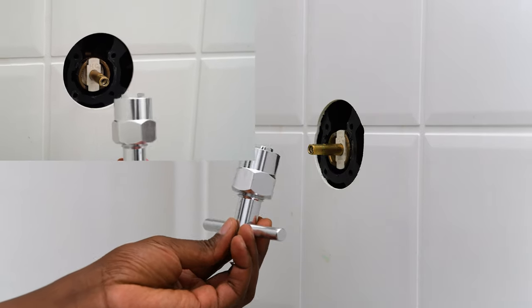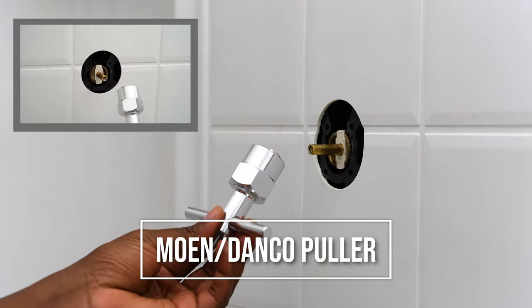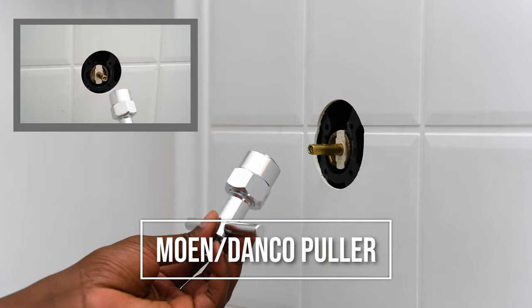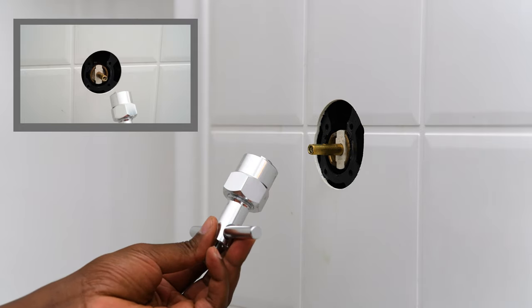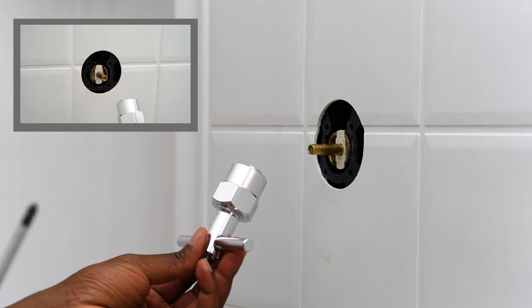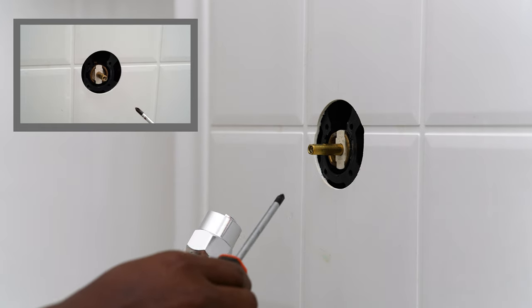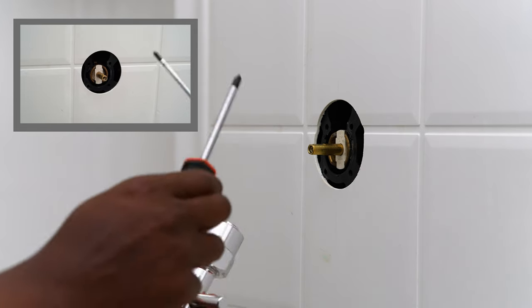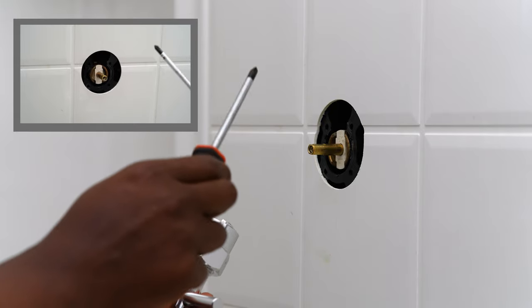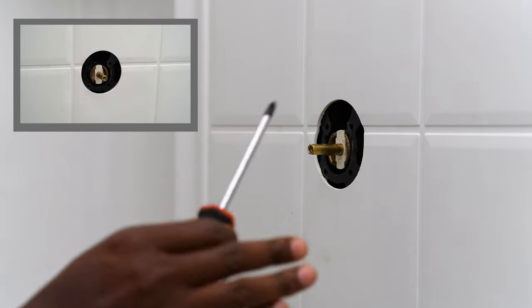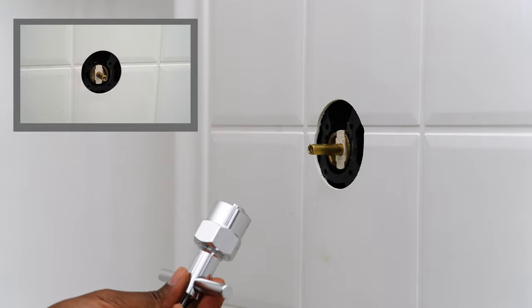All right, so the first tool we're going to use is this Moen cartridge puller. Danco makes it as well, they're just a third party vendor. They're both about the same, so it doesn't really matter. One little tip though, for the cartridges, Danco makes a third party one of these. Never get those. Always stick with genuine Moen products. Trust me, you'll thank me later.